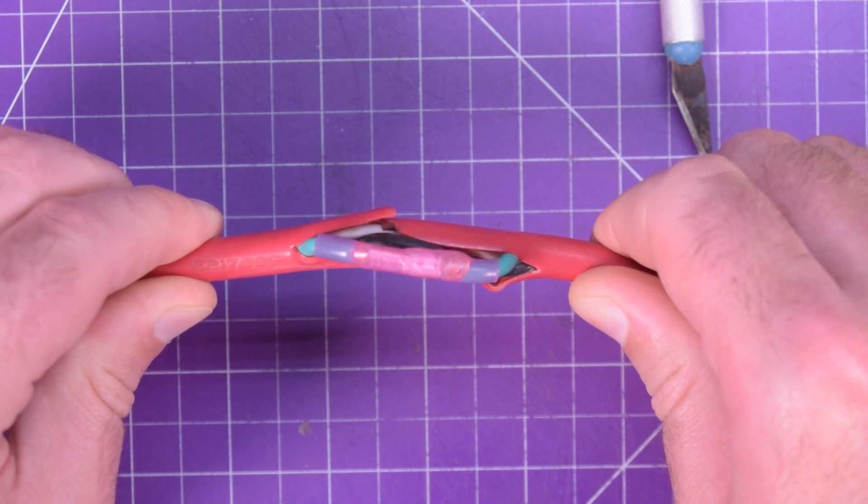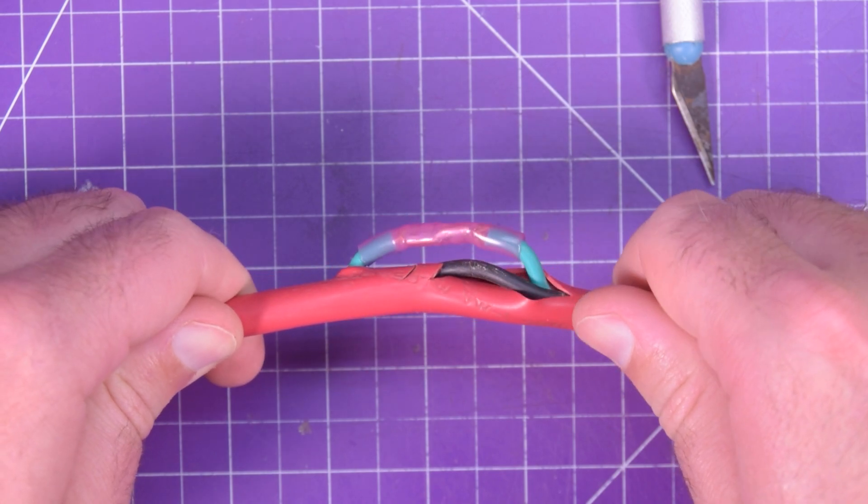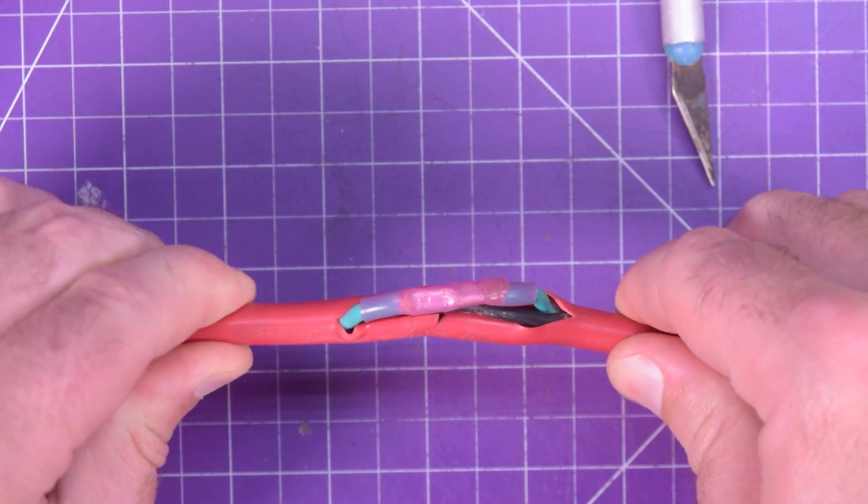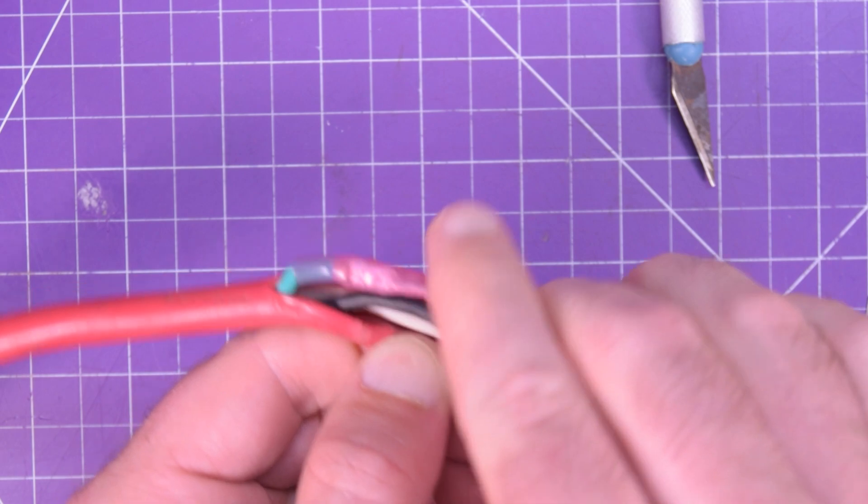So not only is this properly crimped together, but now it is also waterproof. Just need to inspect the other wires for damage, which there is none.